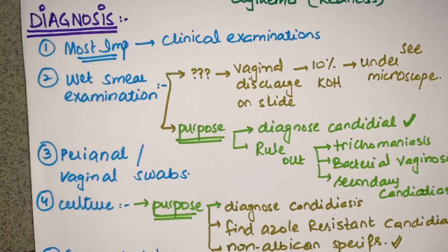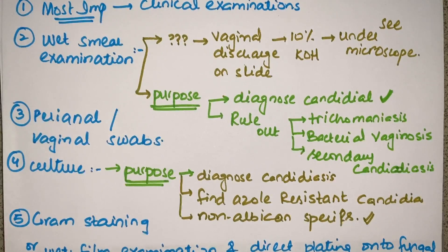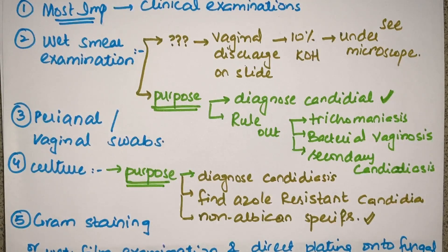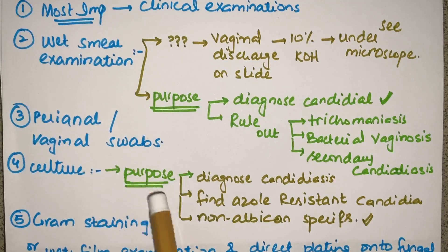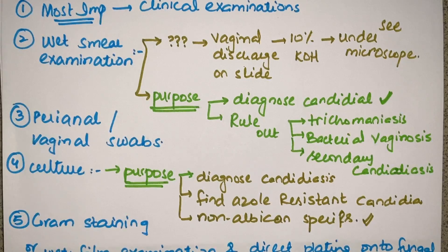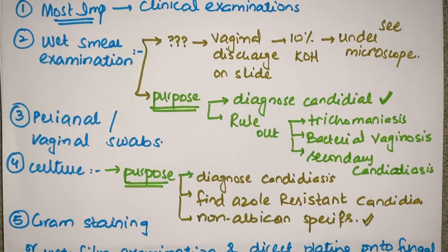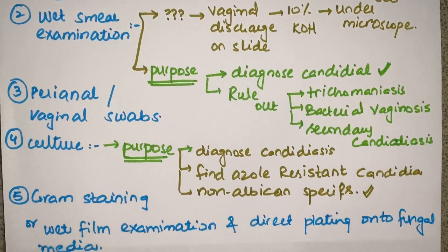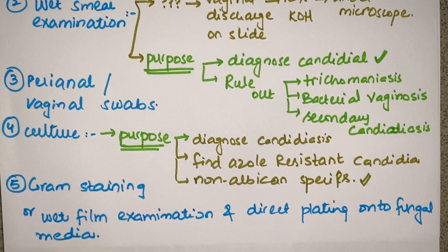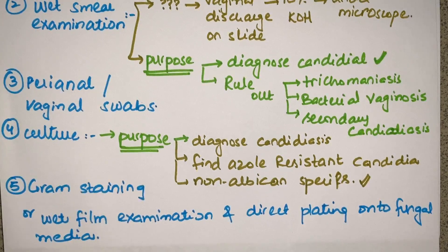Another method is taking perianal or vaginal swabs for culture on culture media. The purpose is to diagnose candidiasis and find out if there are any resistant candida species present, or non-albicans species like glabrata and tropicalis, so the patient can be treated accordingly. Other methods include gram staining, wet film examination, and direct plating onto fungal media.